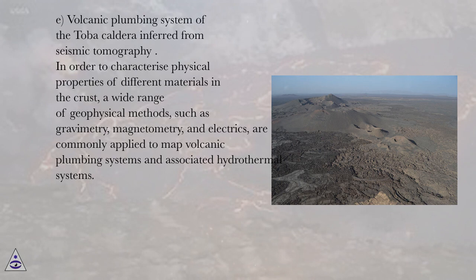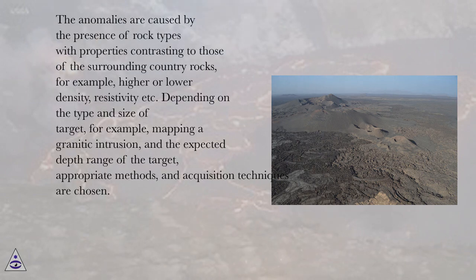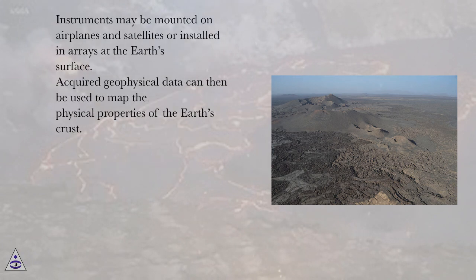In order to characterize physical properties of different materials in the crust, a wide range of geophysical methods — such as gravimetry, magnetometry, and electrics — are commonly applied to map volcanic plumbing systems and associated hydrothermal systems. These methods detect anomalies in the Earth's gravimetric, magnetic, and electrical resistivity fields. The anomalies are caused by the presence of rock types with properties contrasting to those of the surrounding country rocks, for example higher or lower density or resistivity. Depending on the type, size, and expected depth range of the target, appropriate methods and acquisition techniques are chosen. Instruments may be mounted on airplanes and satellites or installed in arrays at the Earth's surface.